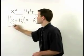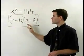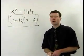x plus 12 times x minus 12 is your answer, a factored version of x squared minus 144.